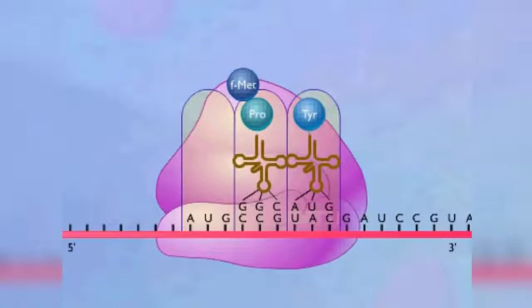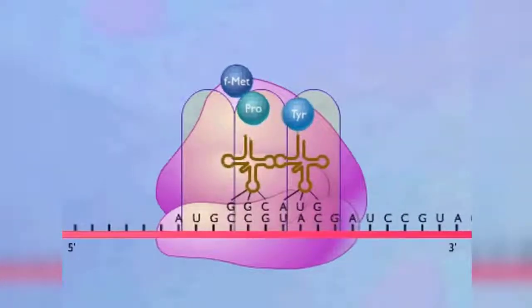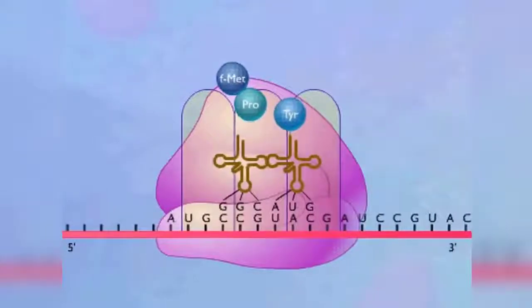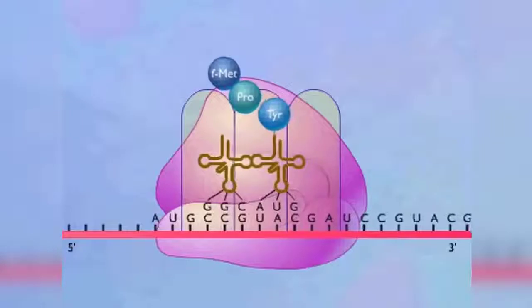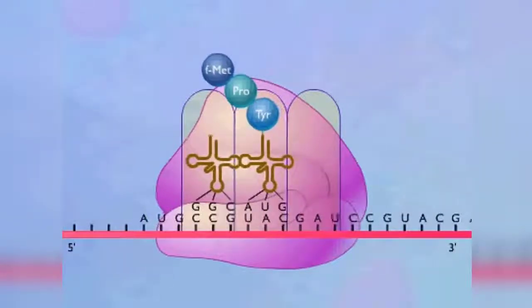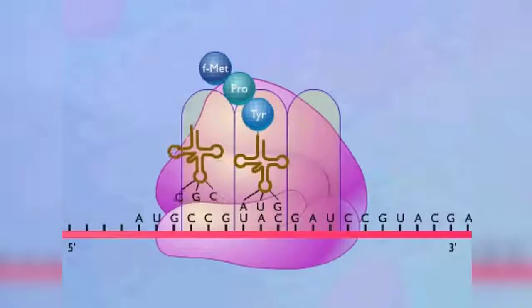The ribosome shifts down by a distance of one codon. As the shift occurs, the two amino acids on the transfer RNA in the P-site are transferred to the new amino acid, and the second transfer RNA is released from the E-site.